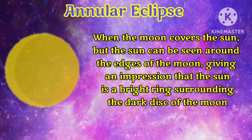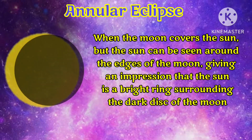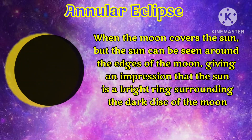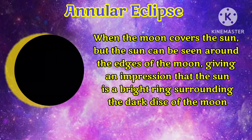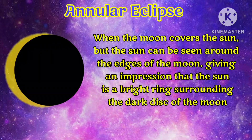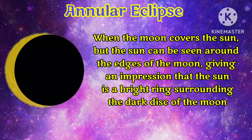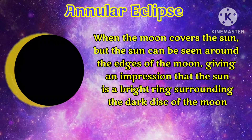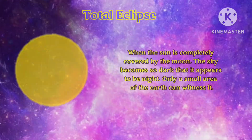An annular eclipse occurs when the moon covers the sun, but the sun can be seen around the edges of the moon, giving an impression that the sun is a bright ring surrounding the dark disk of the moon.